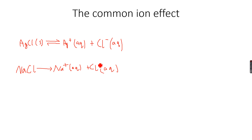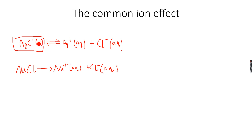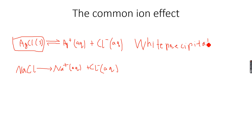Since Cl⁻ ion concentration increases, the equilibrium shifts to decrease it, opposing the change. More Ag⁺ and Cl⁻ ions react to form more AgCl solid, so a white precipitate forms — because AgCl solid is white. This happens because both solutions share Cl⁻ as a common ion, which is why it is called the common ion effect.